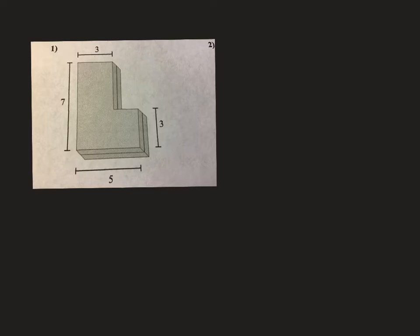This is the first problem in our worksheet. As you can see, this is not strictly a rectangular prism. We can't just do length times width times height because it has a funky L shape and doesn't have a consistent length, width, and height. What we can do is decompose it, or break it into two different ones.